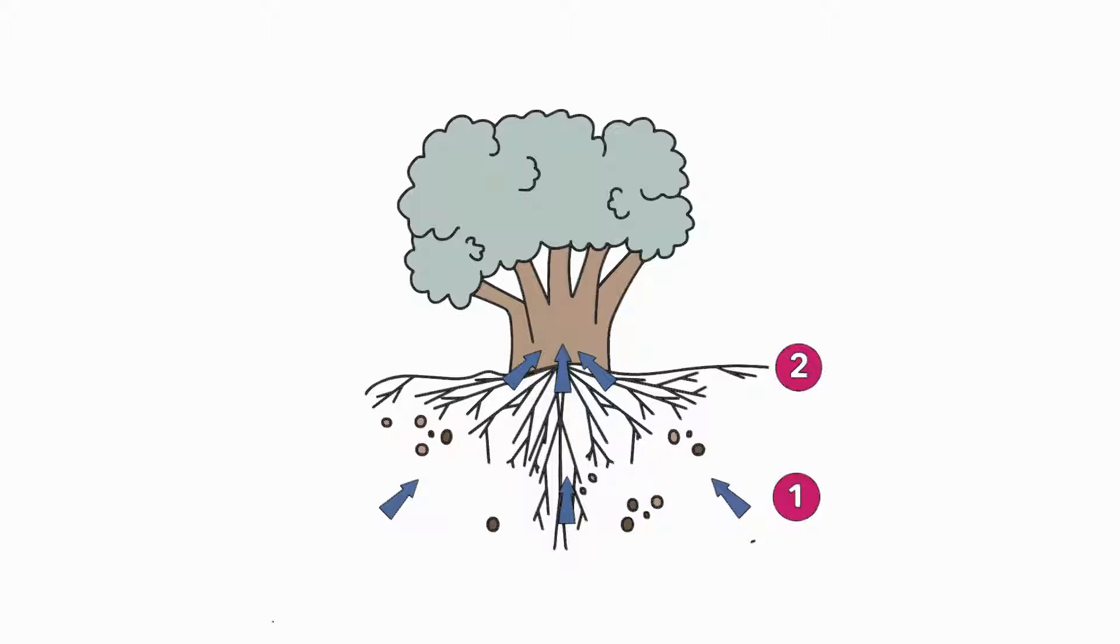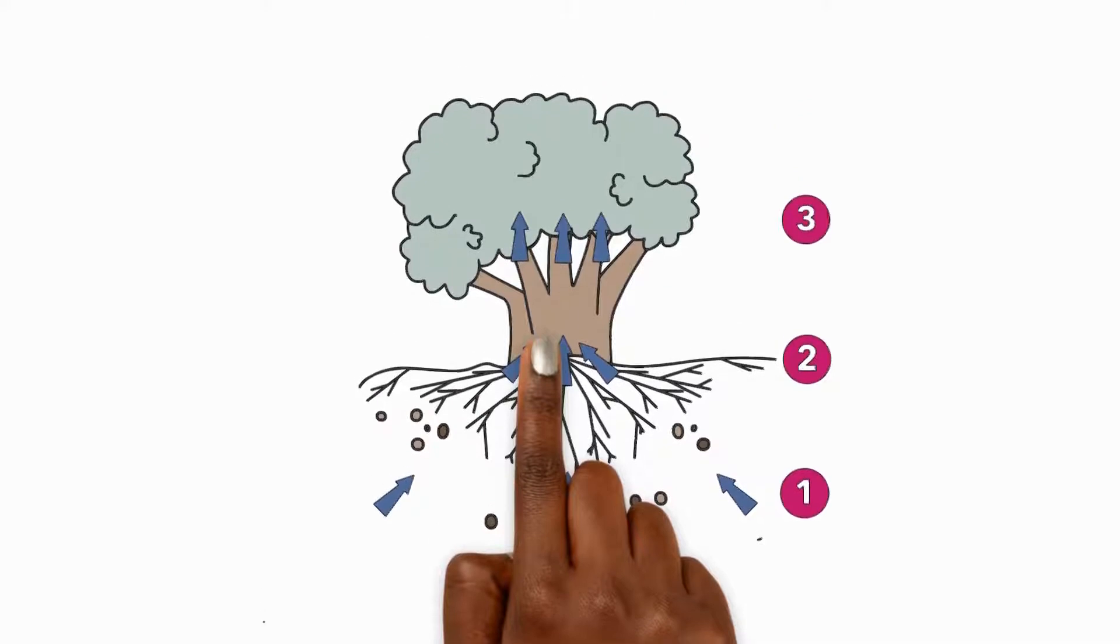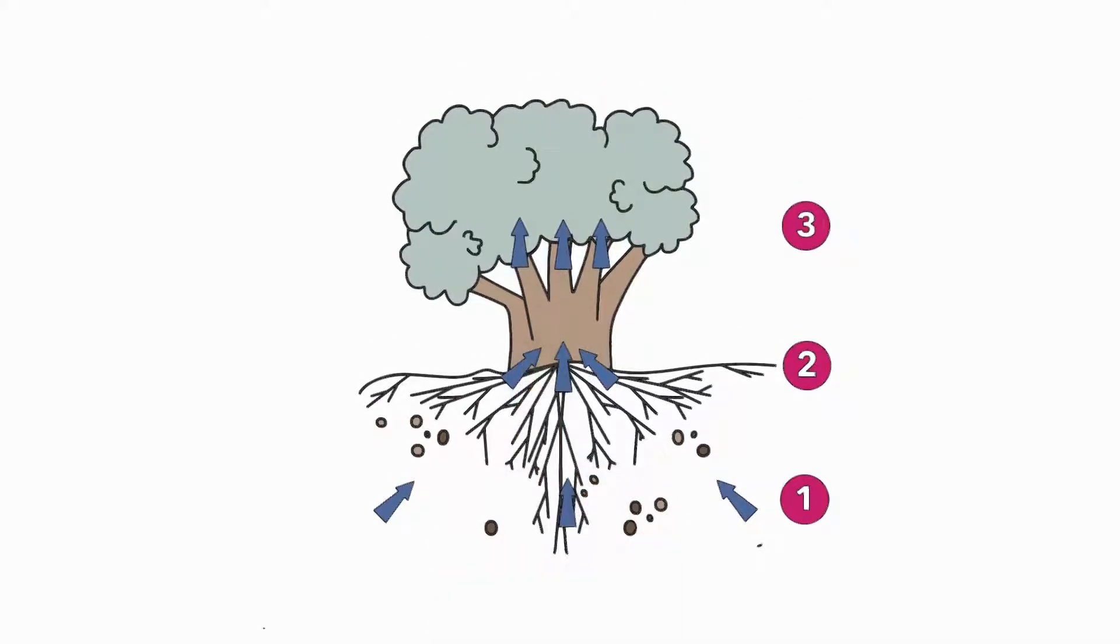In very tall trees, water has a very long way to travel. From the stem, the water moves to the leaves.